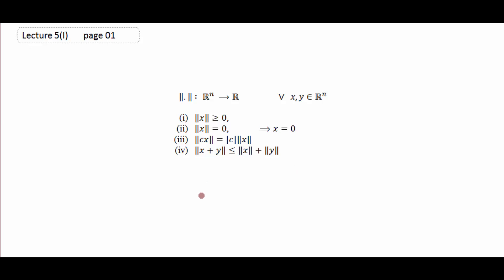آپ کو پتا ہے کہ topological space ہوتی ہے، یہ super set ہے۔ Topological space کا جو sub-set ہے وہ metric space ہوتا ہے، اور metric space کا sub-set جو ہے وہ normed space ہوتا ہے۔ Normed space جو ہے یہ super set ہوتا ہے inner product space کا۔ جب بھی آپ کے پاس کوئی vector space ہوگی تو اس پہ آپ اس طرح سے ایک norm define کر سکتے ہیں — یہ آپ کے پاس Rⁿ vector space ہے، اس پہ ایک real-valued norm defined ہے۔